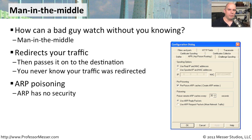One common way to perform man-in-the-middle attacks on a local subnet is with something called ARP poisoning. This is when ARP messages are sent that are not coming from the right IP address — they're actually coming from the man in the middle, who is pretending to be the end station.